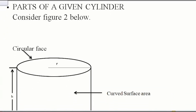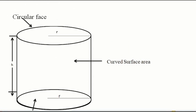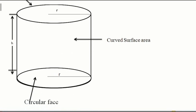Now the next thing we look at is the parts of a given cylinder. Considering figure 2, we have two circular faces — one is at the top and one is at the bottom. Then we have the curved surface area, the height of the cylinder, and the radius. We have one bottom circular face and one top circular face.